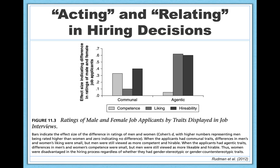The women in the study were in a catch-22: disqualified based on perceived incompetence if they acted femininely, or due to backlash if they displayed agency. Either way, they were disqualified.